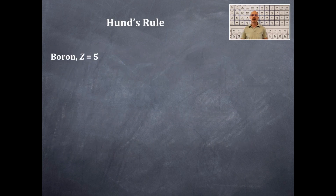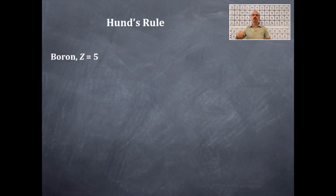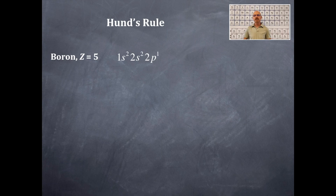Let's take a look at boron, which has Z = 5. The electron configuration for boron is written out step by step: 1s¹, 1s², 2s¹, 2s², then 2p¹. Combined, that gives us 1s², 2s², 2p¹.